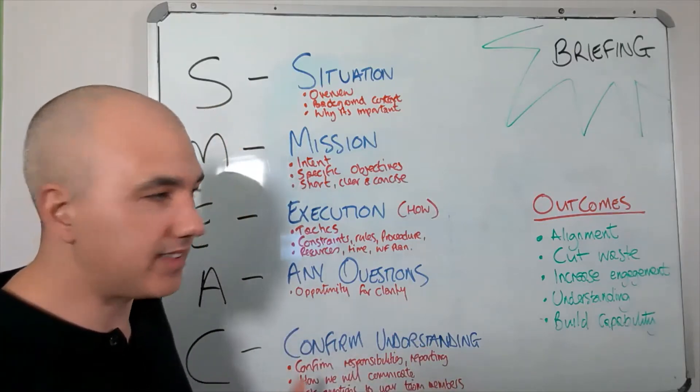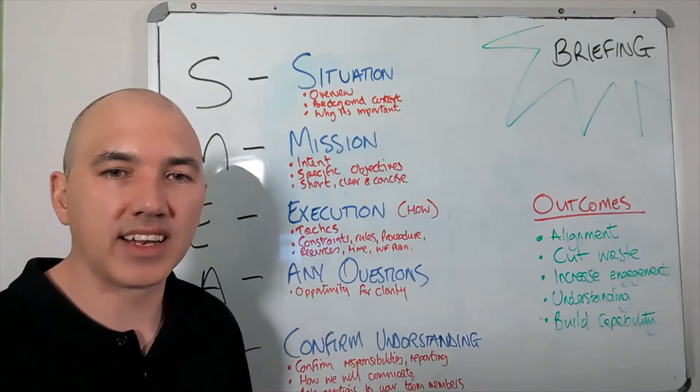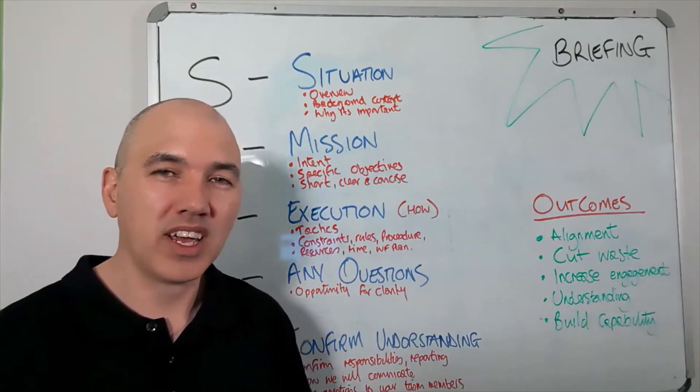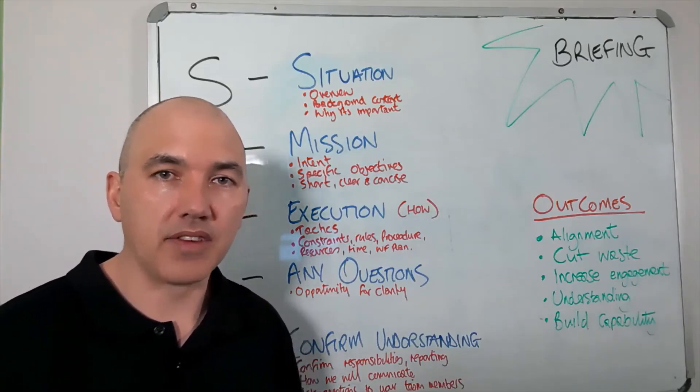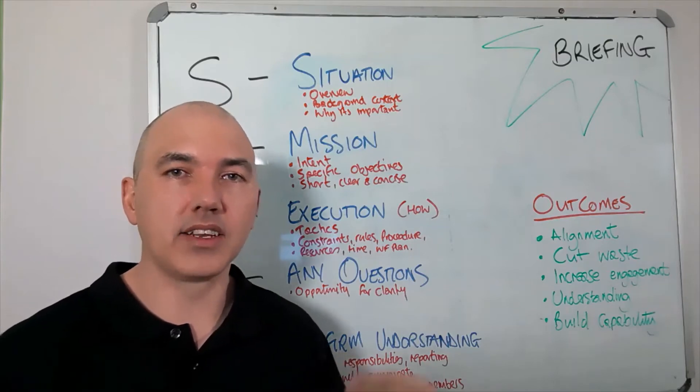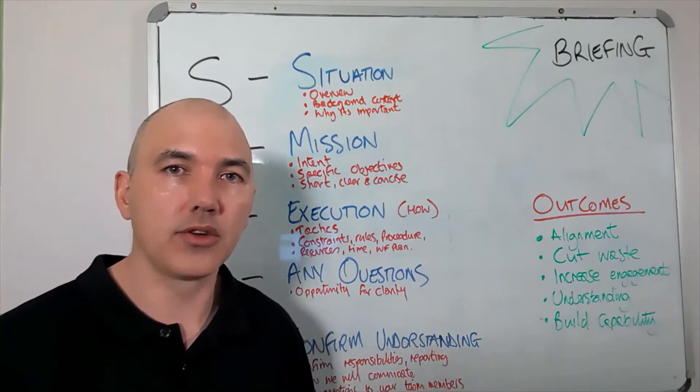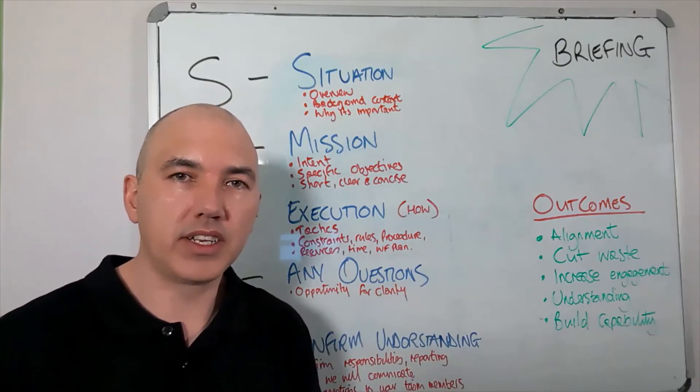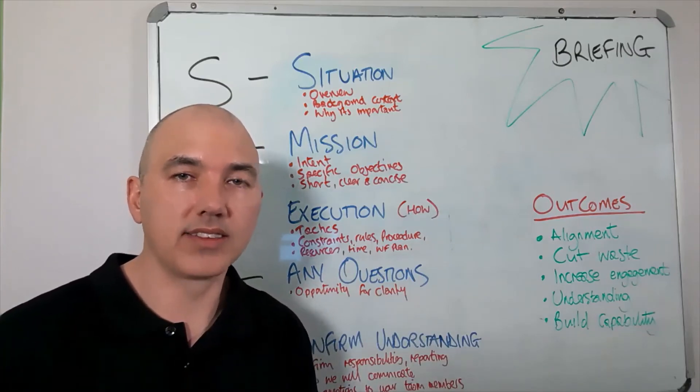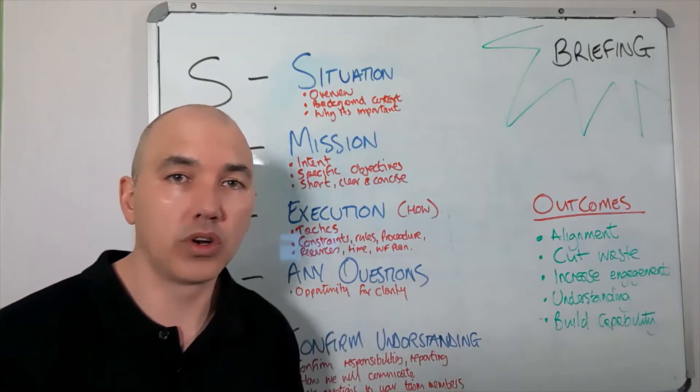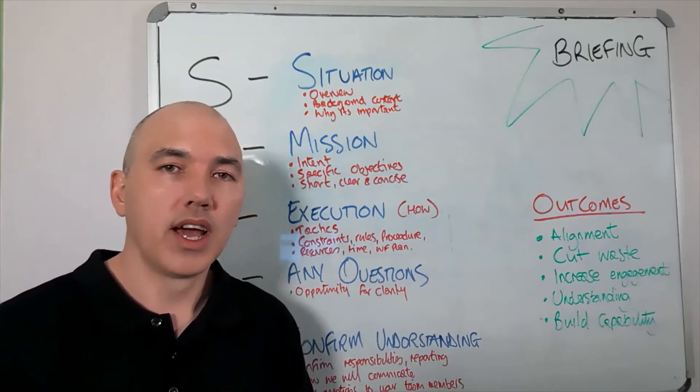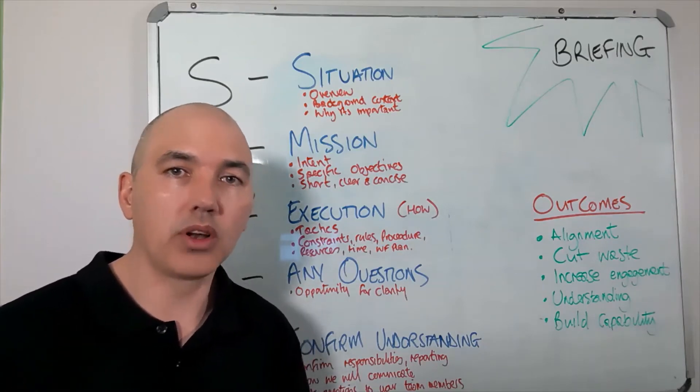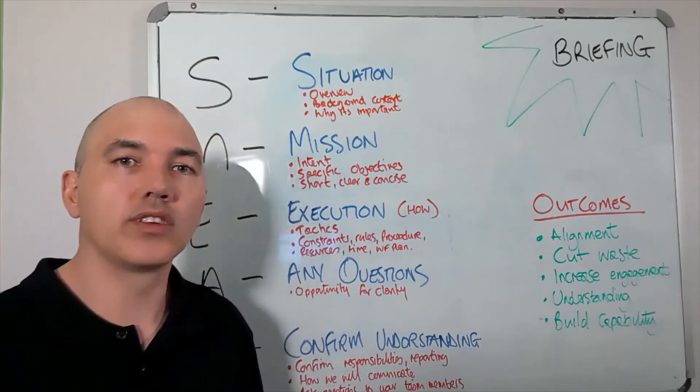The final part is the C. Now, that is around Confirm Understanding. So, it's your opportunity to confirm the understanding that your team members have. And the way you do this is by asking questions. So, you could have them all stood there and go, right, what are we here to do? When does it need to be achieved by? What are the deadlines? Can you give me the resources? What are some of the challenges and issues and what policies are we using within this? What does success look like? Who are our key stakeholders?